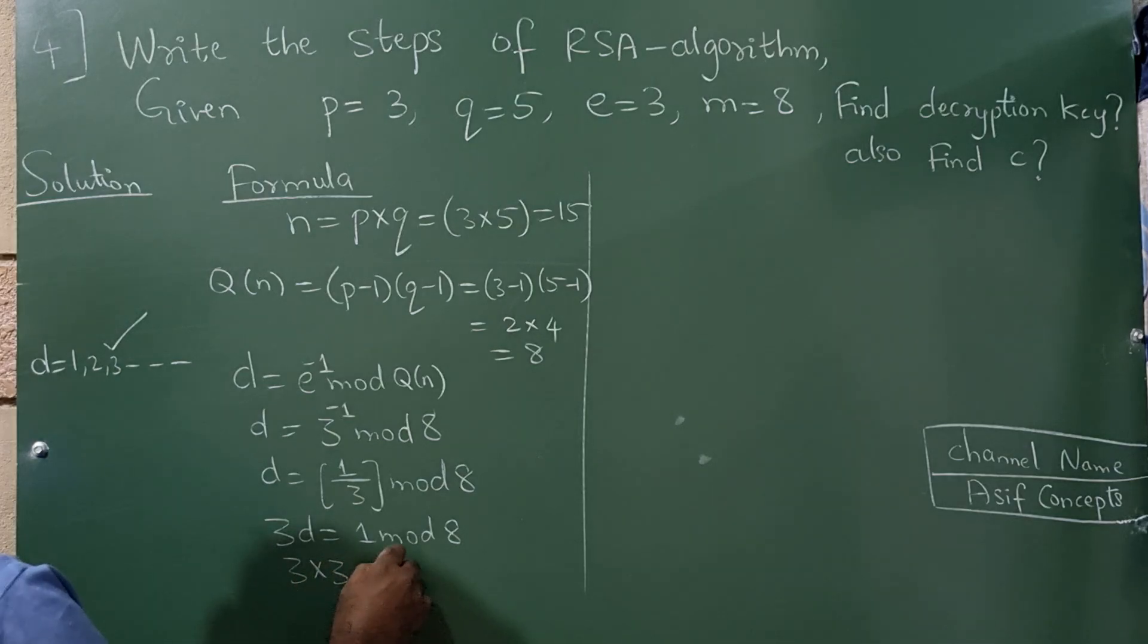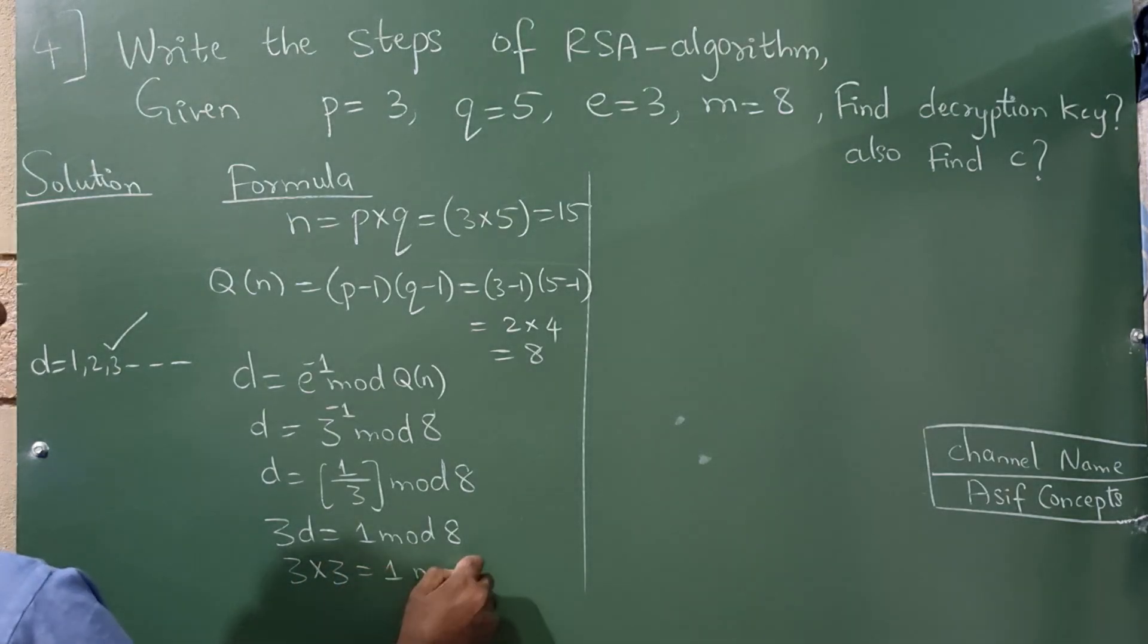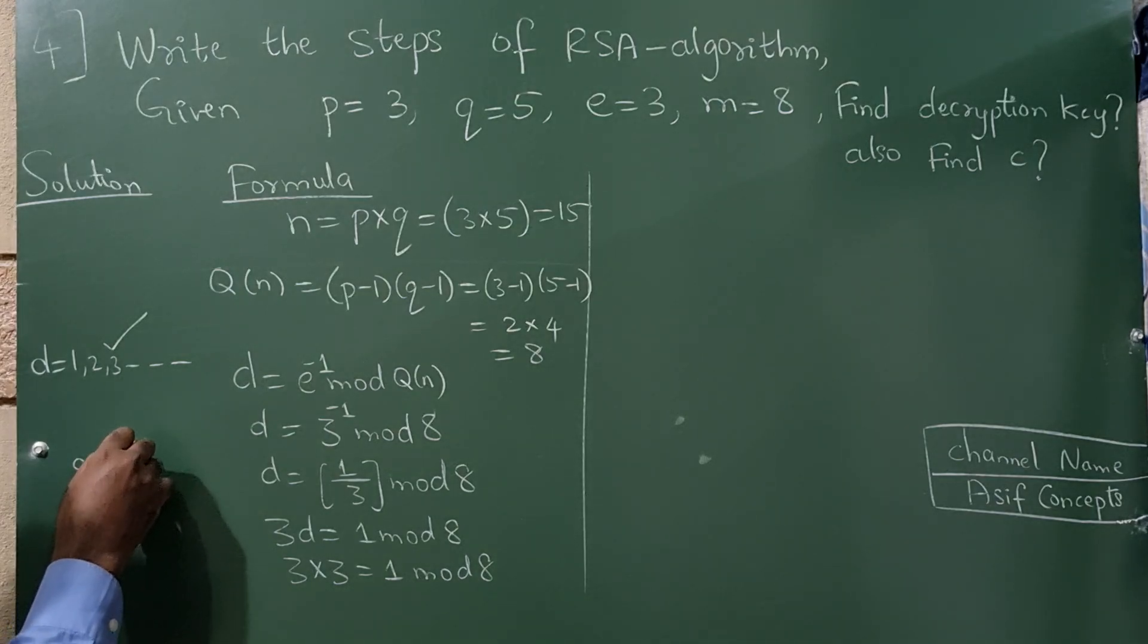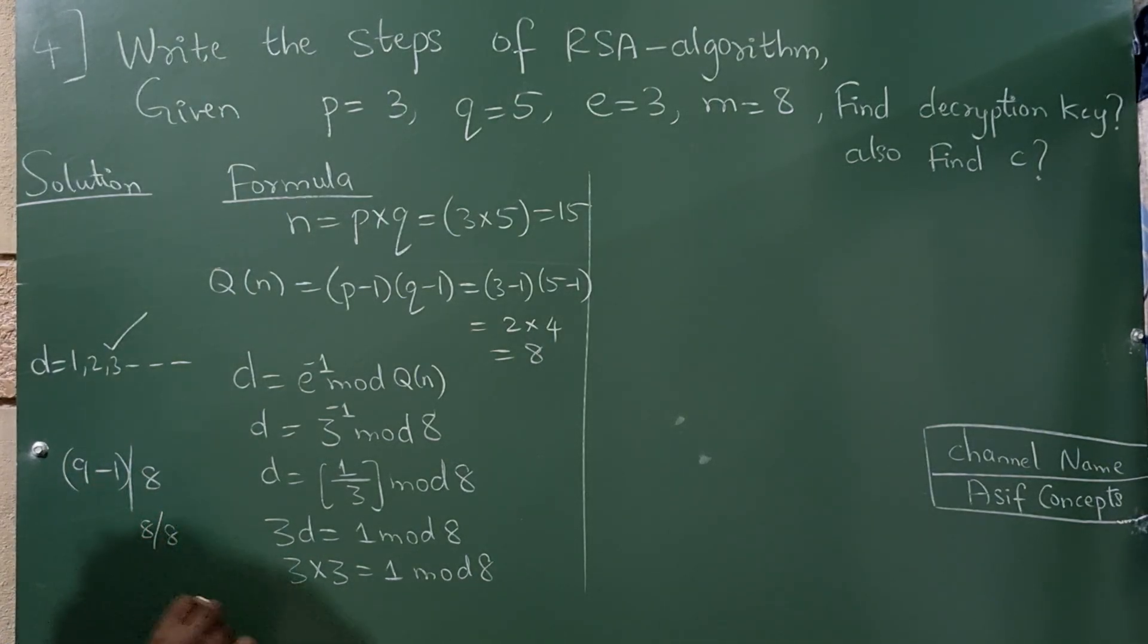So what will happen? 3 into 3, 1 mod 8. So 3, 3 is 9 minus 1 mod 8. So this is 8 by 8, reminder is 0. Therefore, D value has become 3.